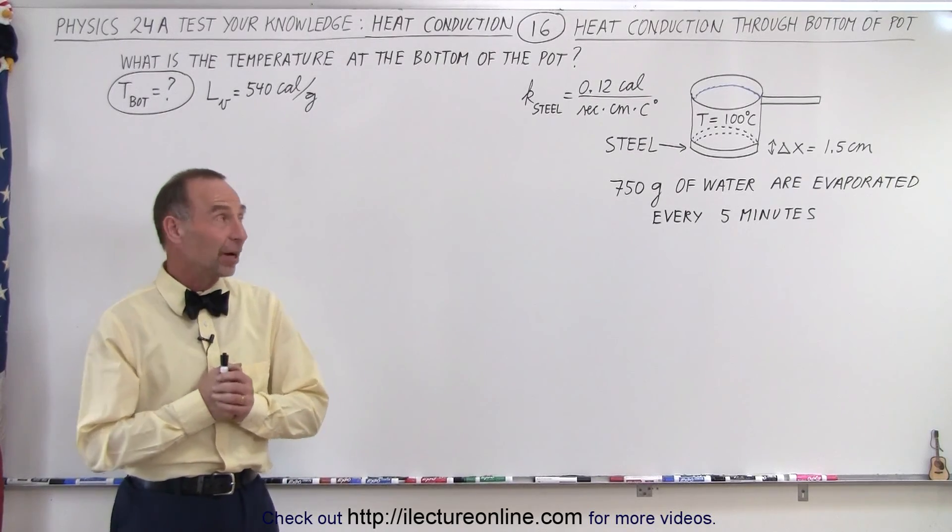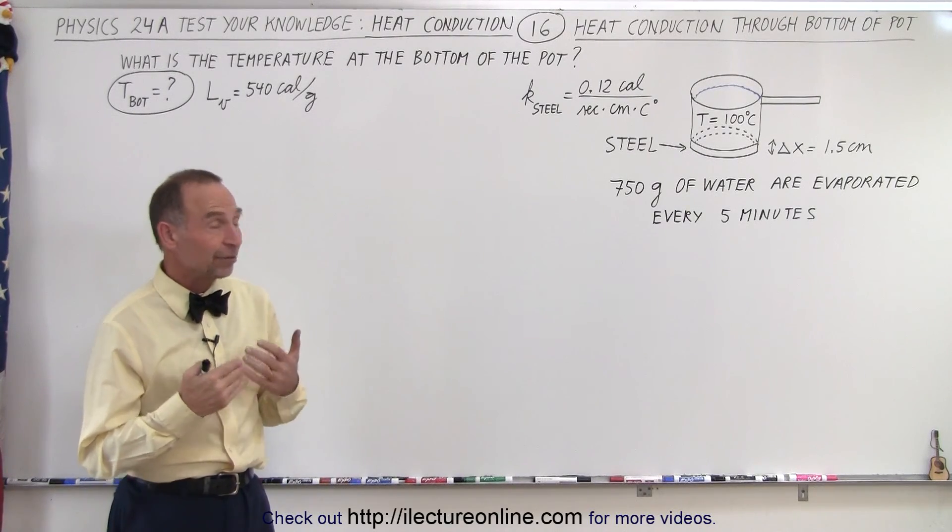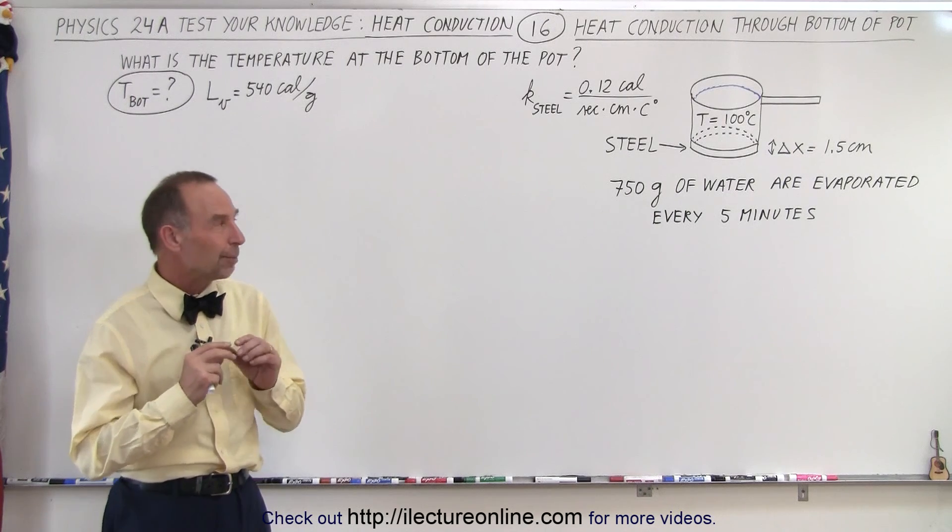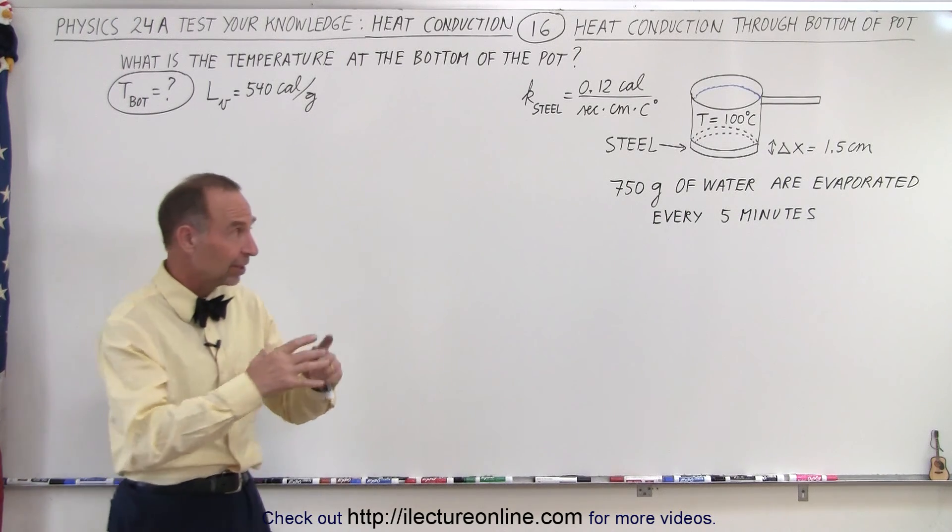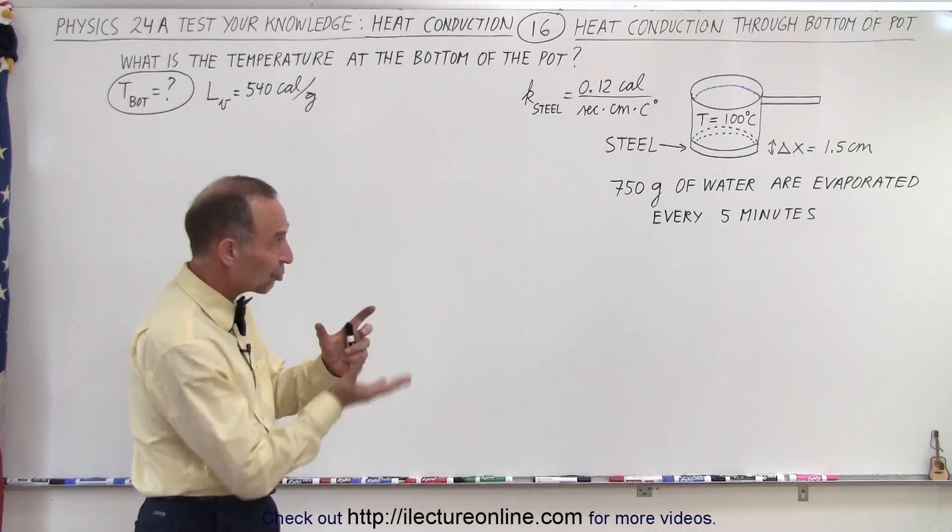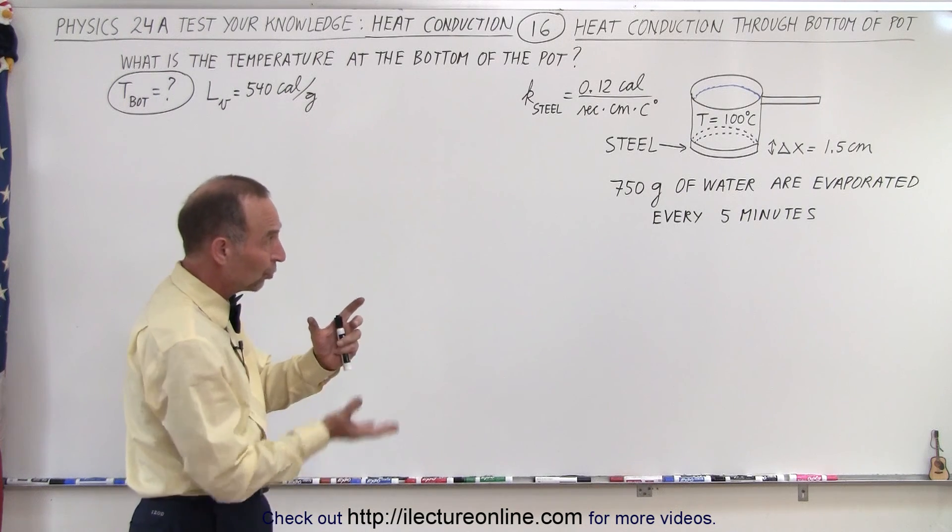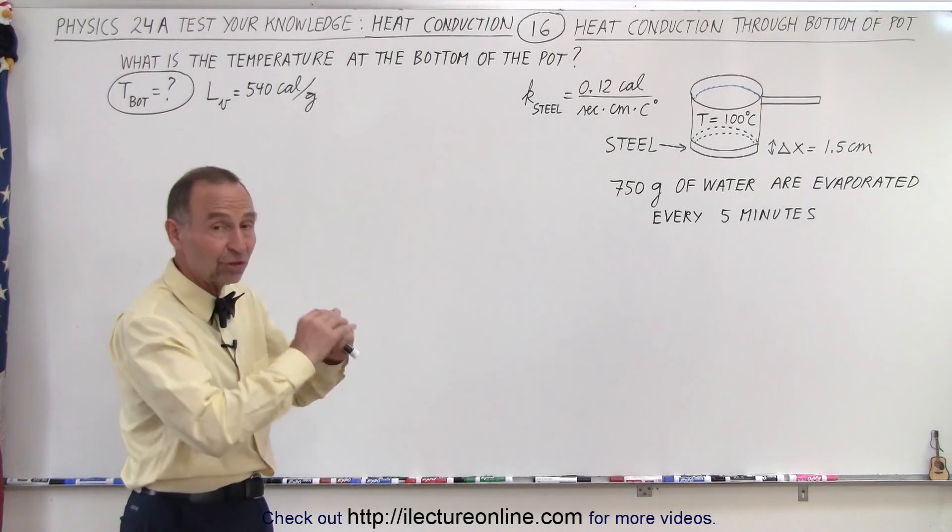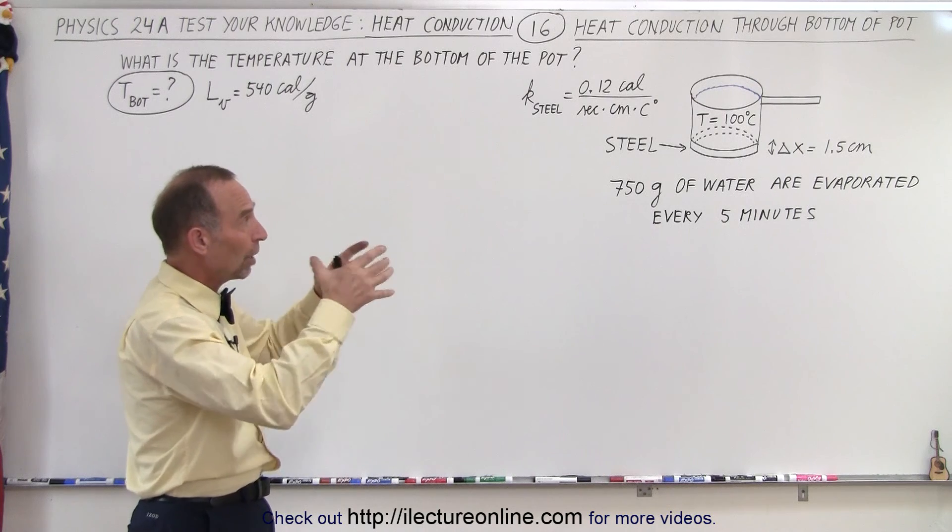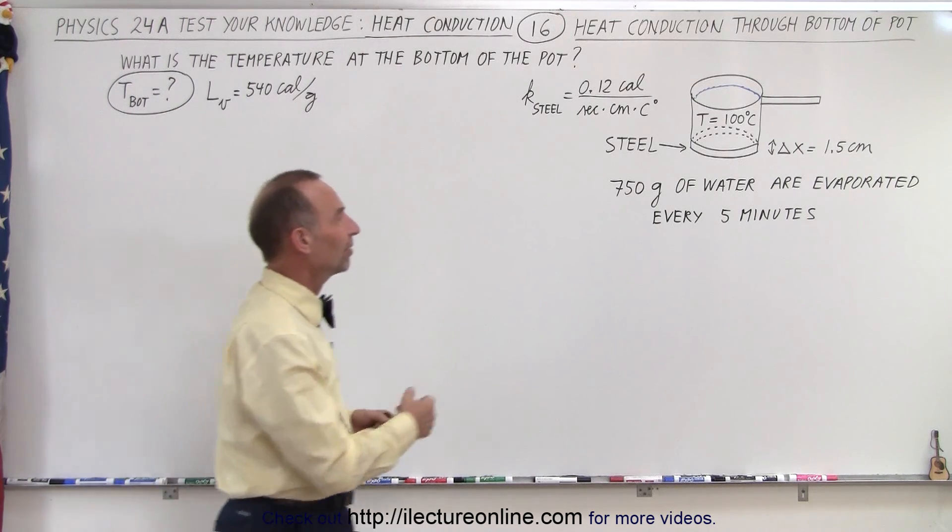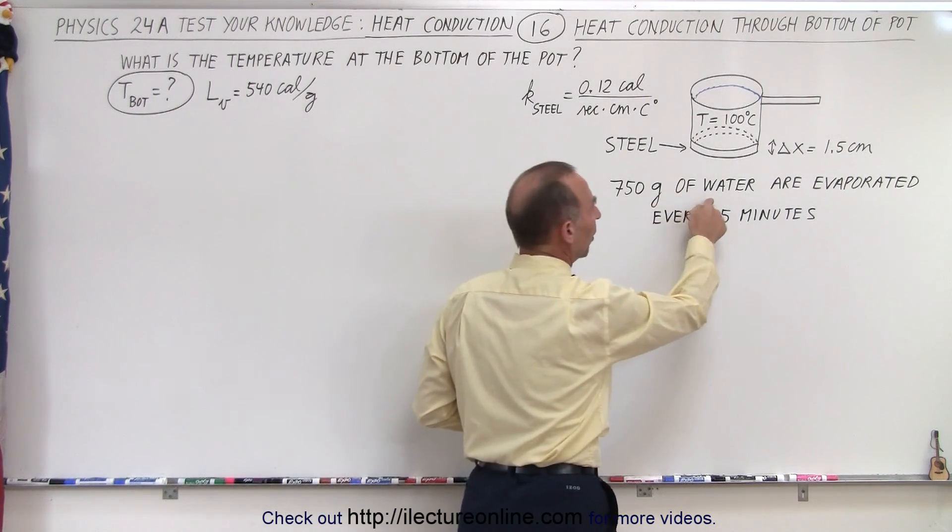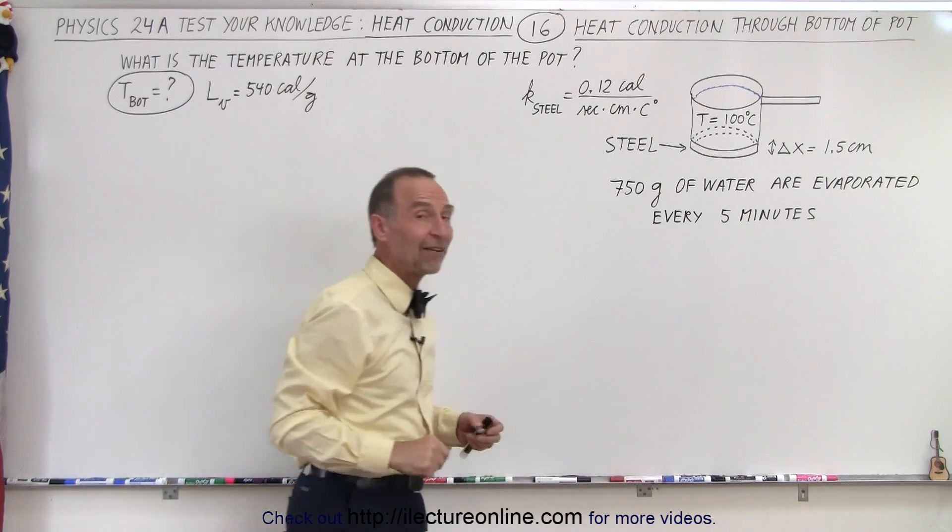Welcome to ElectronLine. Our next problem, we're trying to find the temperature at the bottom of the pot. So we have a pot sitting on an electric stove. Heat is being transferred from the stove through this bottom portion of the pot, which is made out of steel, into the water inside the pot. And notice that 750 grams of water are evaporated every five minutes.